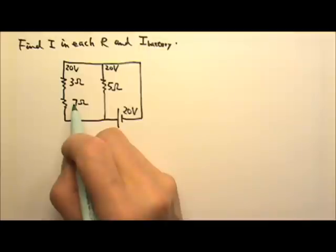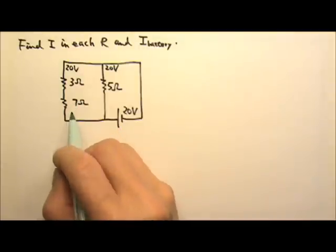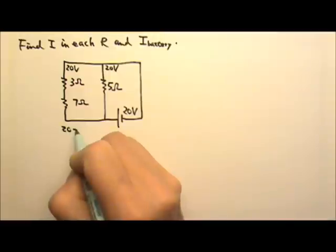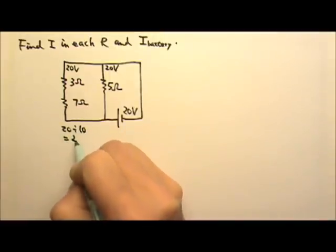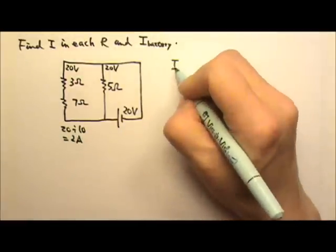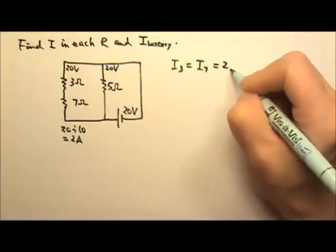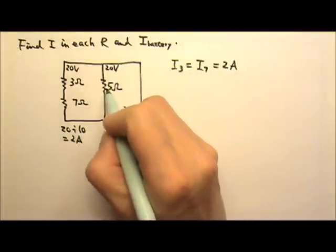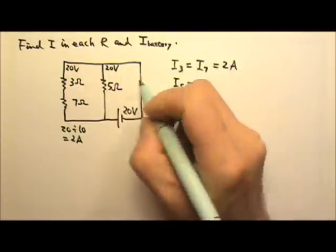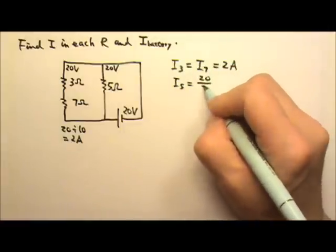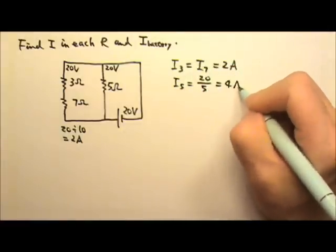So this segment, 20 volts, is 3 plus 7, 10 ohms. So the current is 20 divided by 10, 2 amps. So the current in the 3 ohms and the current in the 7 ohms are the same, 2 amps. And this one here, the current in the 5 ohms is the voltage 20 divided by 5 ohms, so it's 4 amps.